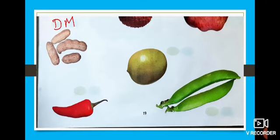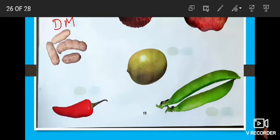And look at the next one. What is this? Lemon. Lemon. Is it soft and juicy or dry? It is soft and juicy. So you have to write S. How many seeds does lemon have? Many seeds. So we have to write M.